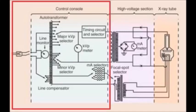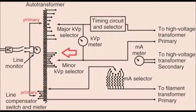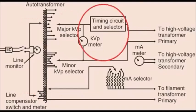On the left here we have the control console section. Main power is maintained at 220 volts by the line compensator and goes to the auto transformer where the major and minimum kVp are selected through self-induction. There are tabs on the secondary side of this auto transformer — voltage is reduced by using the ones near the middle and increased by using the tabs on the outer ends. Power coming from the secondary side of the auto transformer then passes through the kVp meter and timing circuit, which control the length of the exposure.